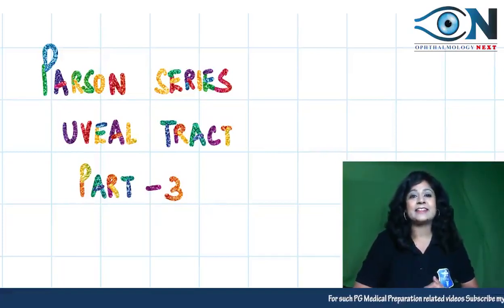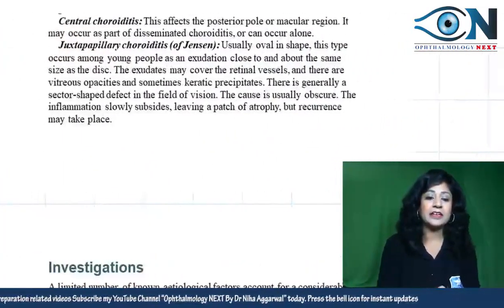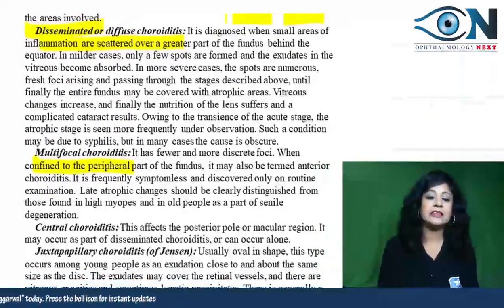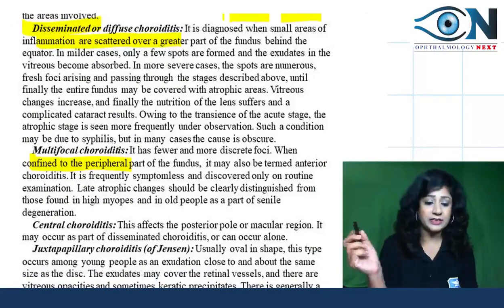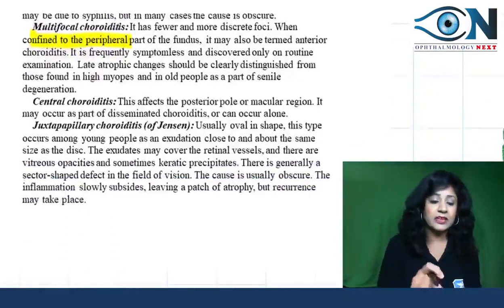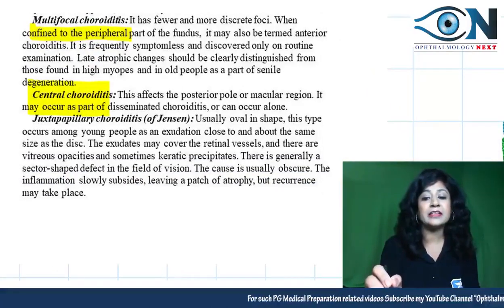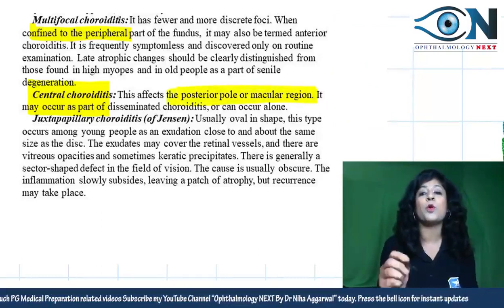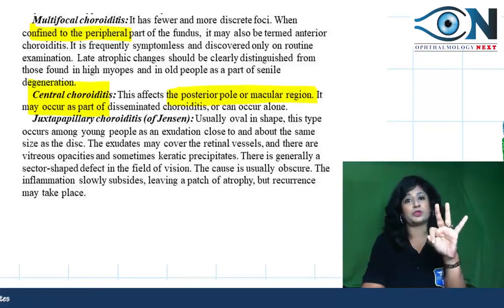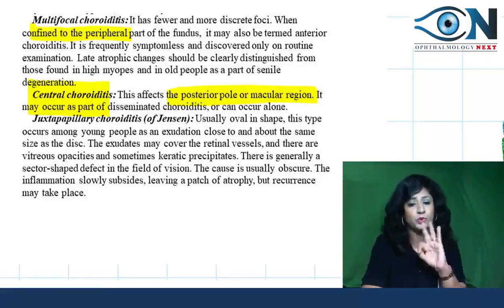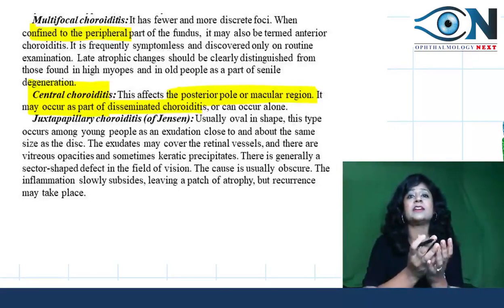Welcome to the Parson Series, Part 3 of the uveal tract. We had previously discussed chorditis — both disseminated chorditis and multifocal chorditis. Today we start with central chorditis, which mainly affects the central area — the posterior pole or macular region. These terms are interchangeable. It may occur as part of disseminated chorditis or appear alone.